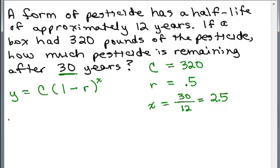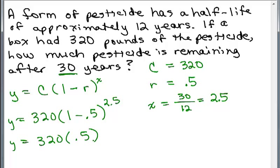Now we're ready to plug it in. So we have 320, 1 minus 0.5 to the 2.5. And when you're going to do half-life, it's always going to just be 0.5 in the parentheses. 1 minus 0.5 is going to keep coming out to be 0.5 to the 2.5 power and now we'll be able to approximate this. Again, be careful if your calculator does not do order of operations and let's round this to the nearest tenth of a pound.